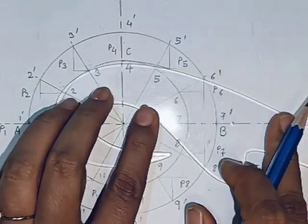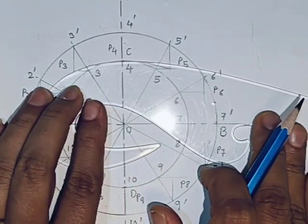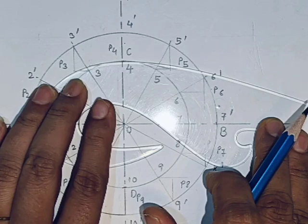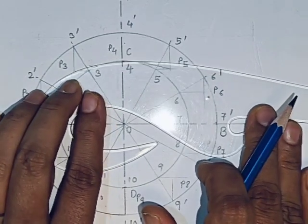The last step is to draw the smooth curve passing through these points to get the ellipse. Take only two points at a time to get a smooth curve.